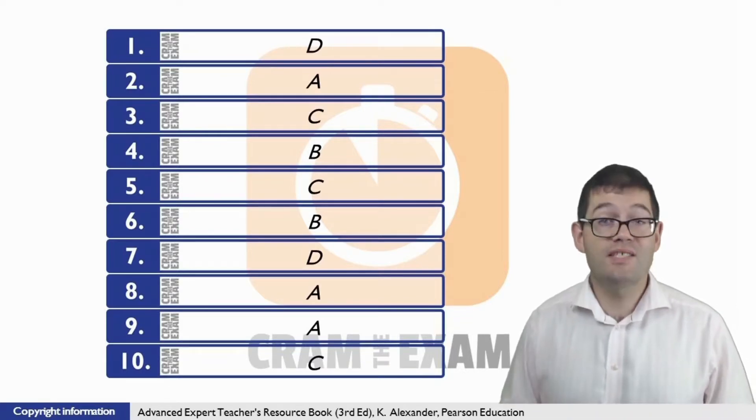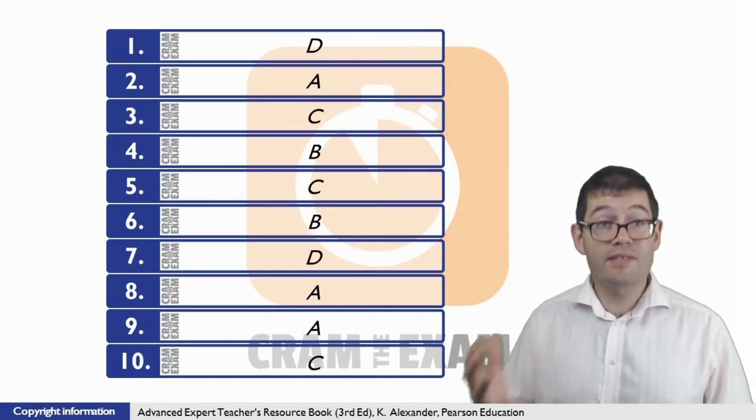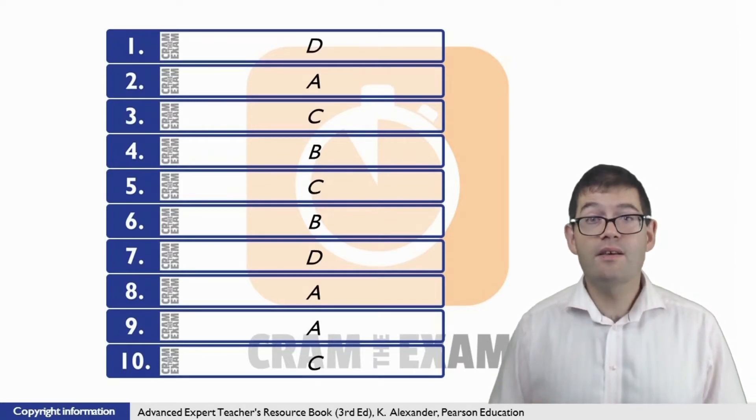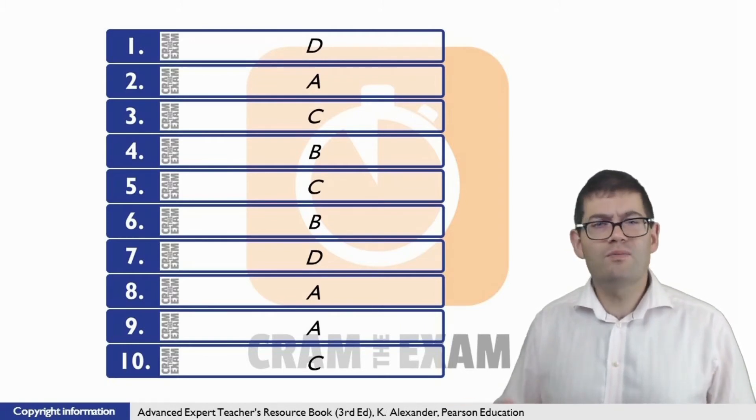For question 10, the answer is C. Chris and Joanna admit that there is little personal contact between them on the working day. Right at the end of C, it says, we'll probably cross paths, in other words meet, at work once a week, which links to little personal contact in question 10.